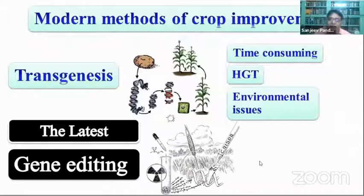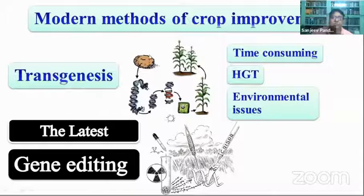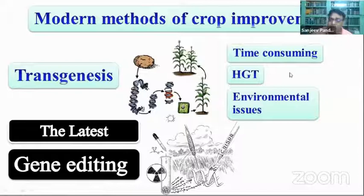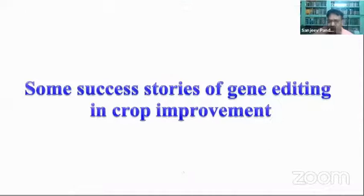Modern methods of transgenesis, developed in the last decades of the 20th century, are also time-consuming — you must isolate DNA from one organism, clone it into a vector, and transfer it to the target organism. In contrast, gene editing directly modifies the target organism without isolating genes from other organisms. It is less time-consuming, avoids horizontal gene transfer problems, and reduces environmental concerns significantly.